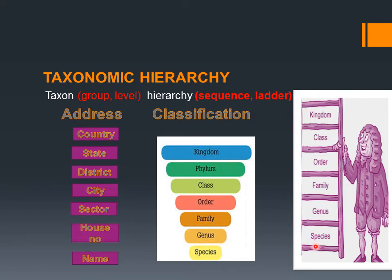The taxonomic hierarchy from smallest to largest is: species, genus, family, order, class, phylum, and kingdom. And from kingdom downward: kingdom, phylum, class, order, family, genus, and species — leading to one individual organism.